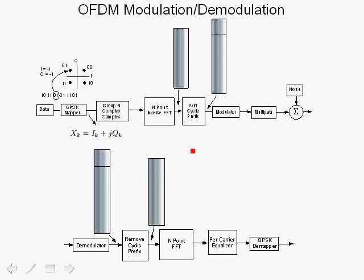So this is how we use cyclic prefix to combat inter-symbol interference. We add a cyclic prefix at the transmitter and throw it away at the receiver, recovering the original carriers with minimum inter-symbol interference.